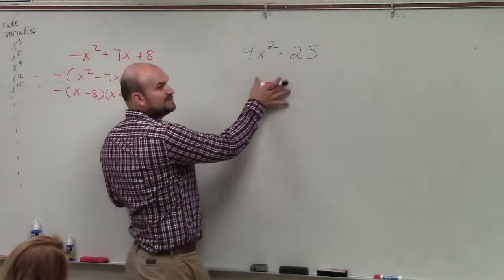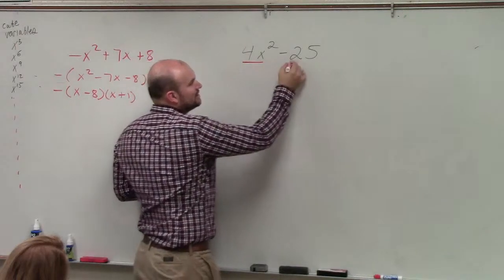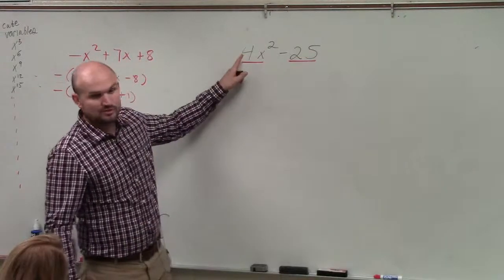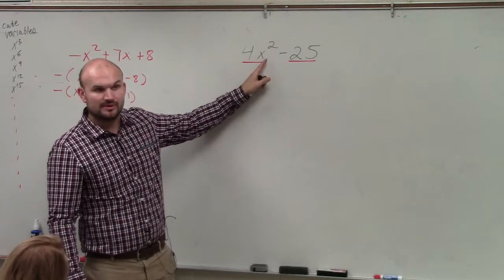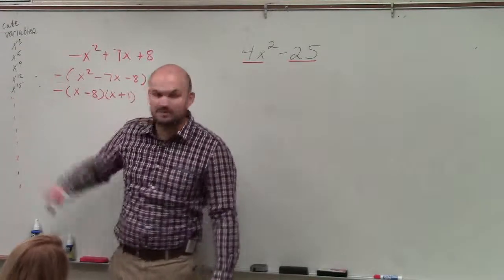So basically, what we need to do then is I want you to understand, always look to see if you're dealing with squared terms. In this case, we are dealing with squared terms. 4 is a squared number, and x squared is a squared number, right? 25 is a squared number. I even wrote down square numbers over there for you.